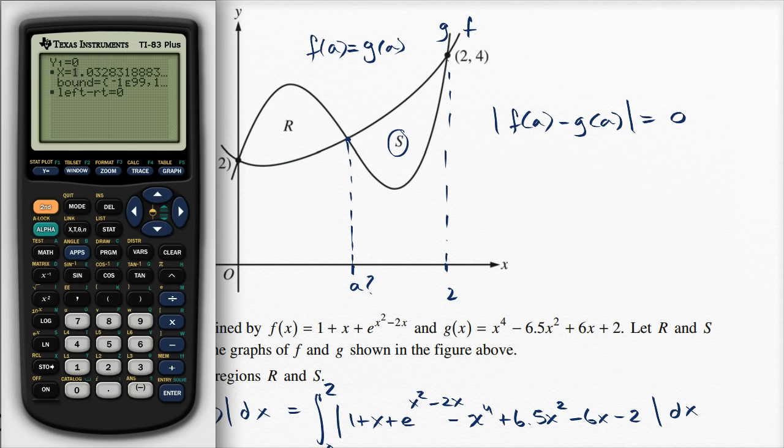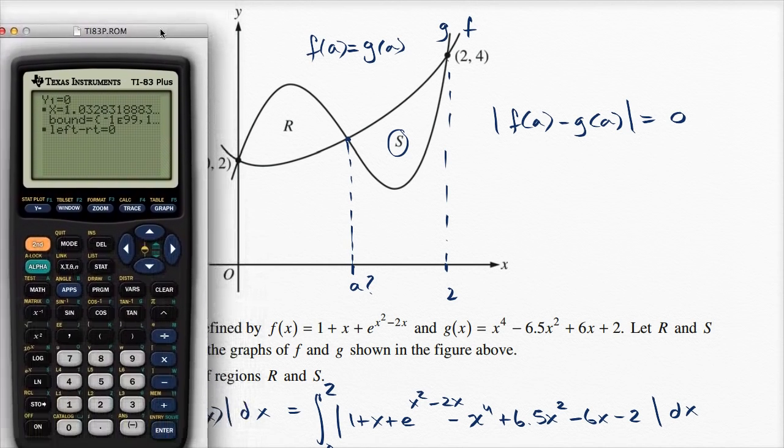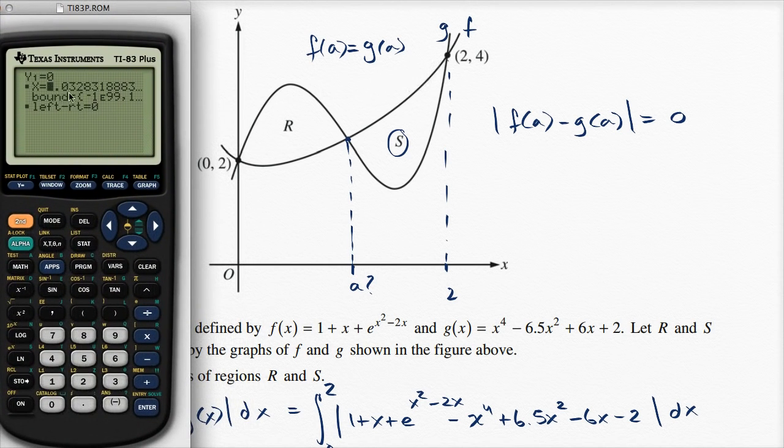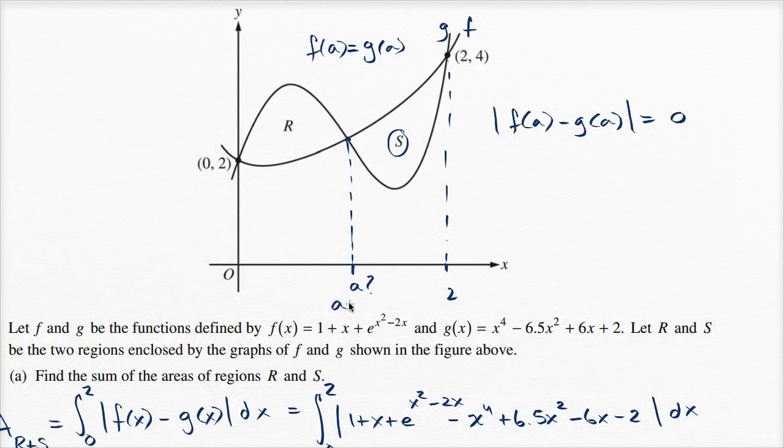And there you go. It got to 1.03, which is the one we want. It didn't go to x equals 0 or x equals 2. It went to 1.03. So A is approximately equal to 1.03.